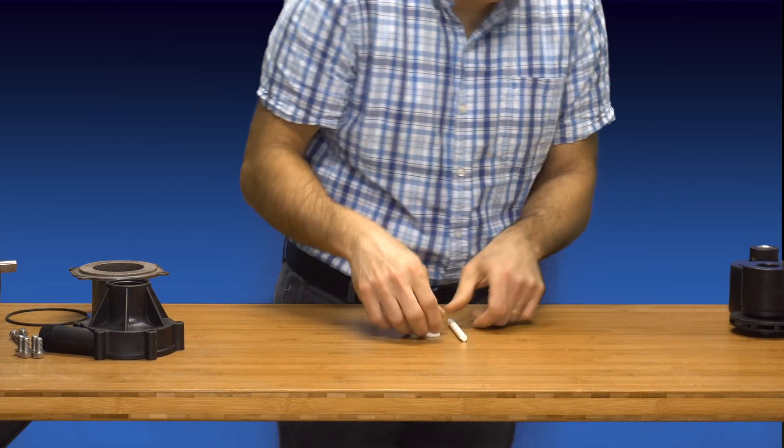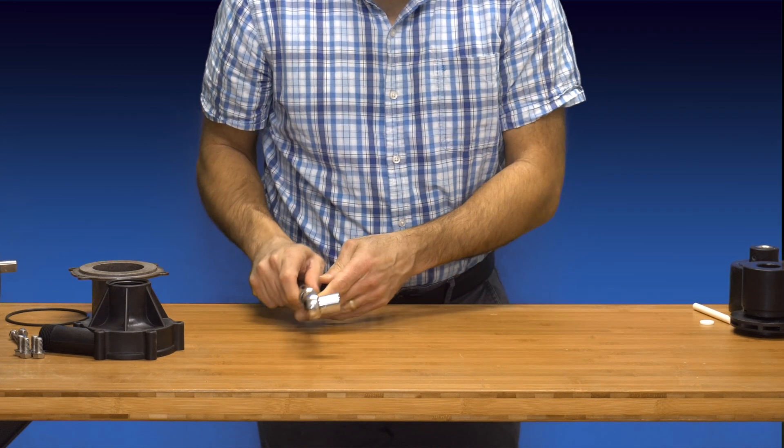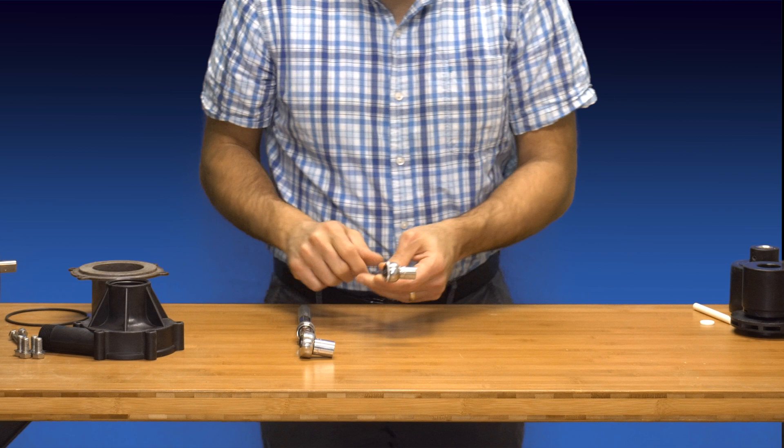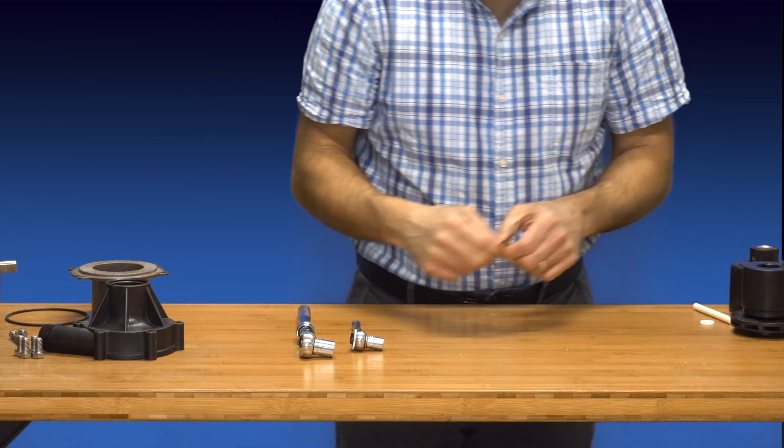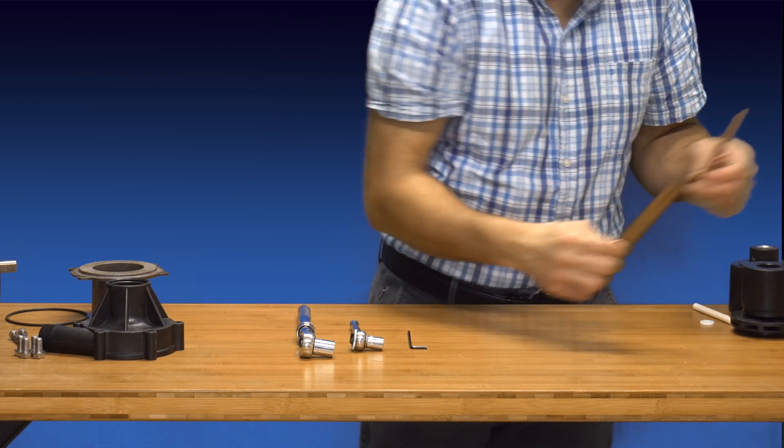Before we begin, here are the tools that will be needed to carry out the assembly process. We'll need to have a ratchet wrench. We're going to use both 3⅛ inch drive and ¼ inch drive wrenches for the two different size screws used in this pump. We'll also need an Allen wrench, as well as two small straight edges.